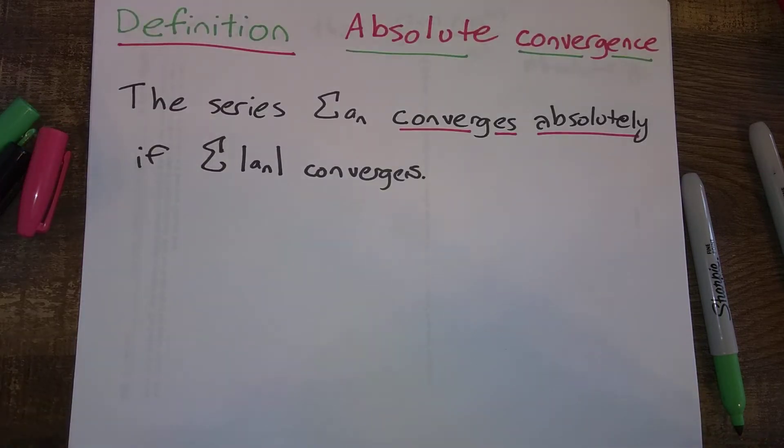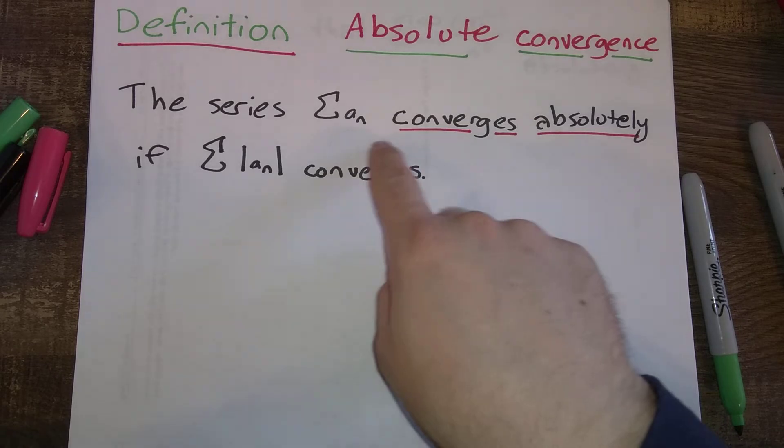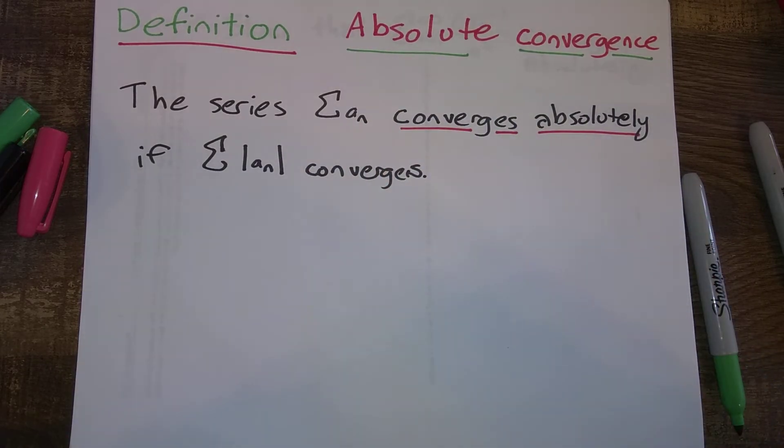So we should start off with a definition here. The first definition is absolute convergence. The series, the sum over a_n, converges absolutely if when you replace a_n with its absolute value, the resulting series still converges.